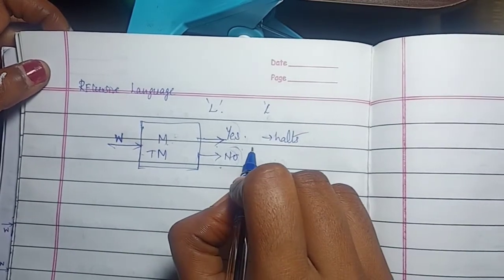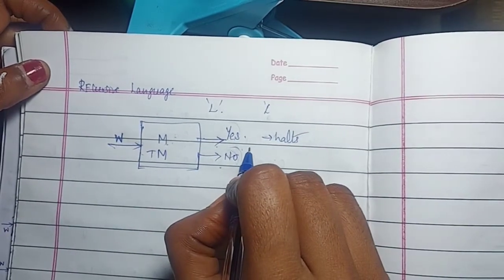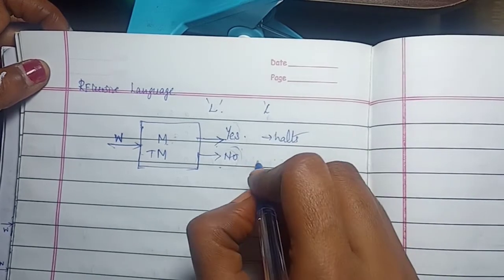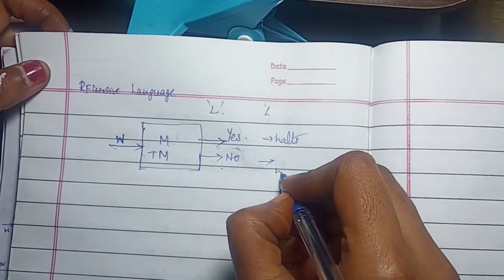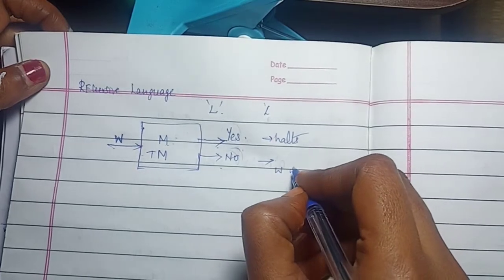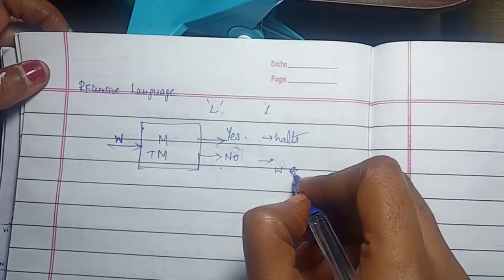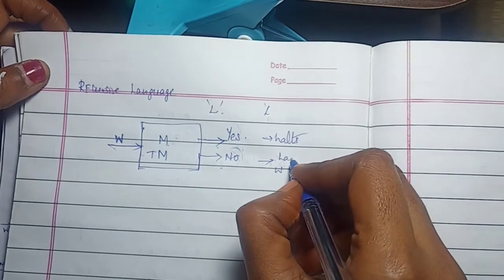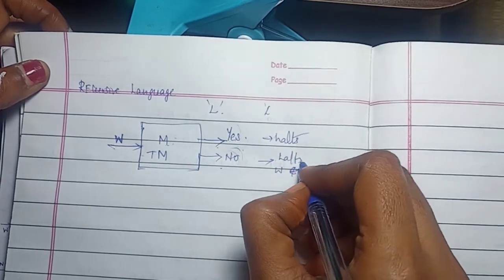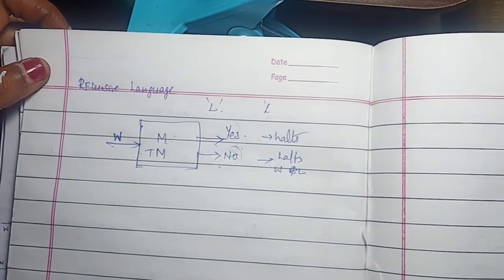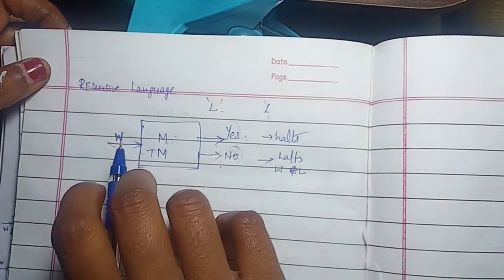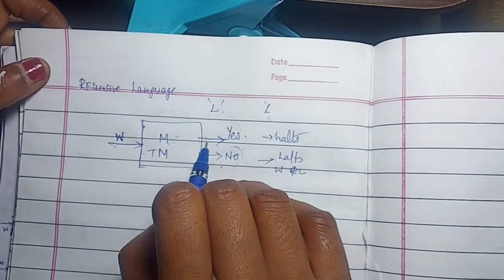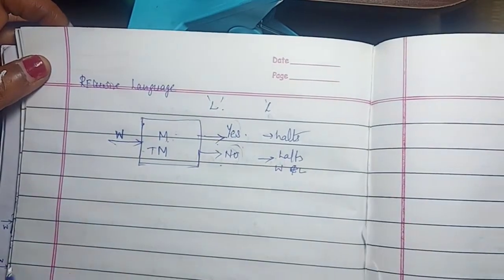If W is not in the language L, then the machine also halts without entering the accept state. Any problem or language L is decidable if it is a recursive language.